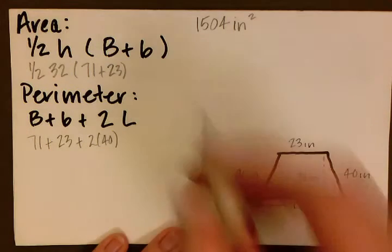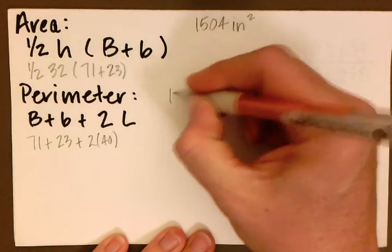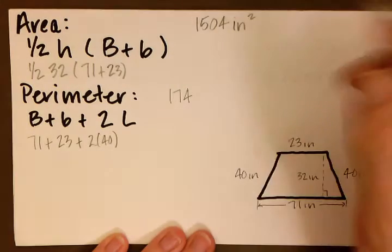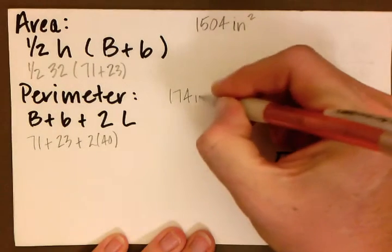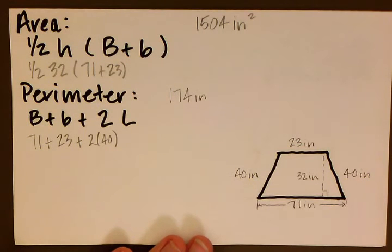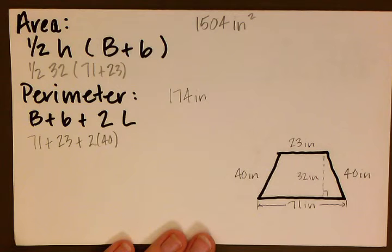This, when we solve, is going to give us 174. And this is also in inches. So that's our answer. Our area is 1504 inches squared, and our perimeter is 174 inches.